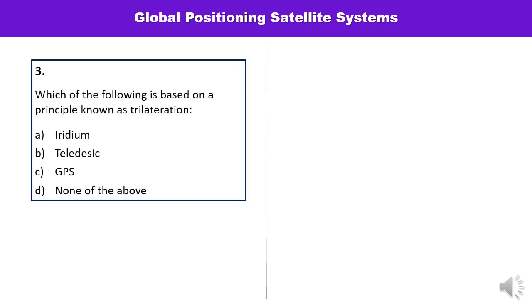Question number three: Which of the following is based on a principle known as trilateration? This is an important principle upon which GPS works. C is the correct answer.